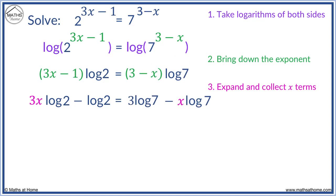We collect the x's on the left. We have 3x log 2 and add x log 7 over. On the right we keep 3 log 7 and we must add log 2 to get it on the right hand side.